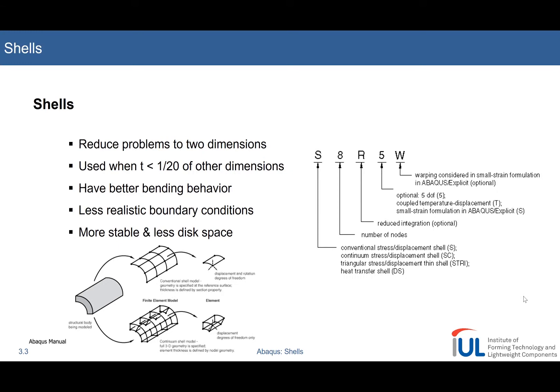From a mathematical perspective, the problems are reduced to two dimensions, and Abaqus provides two general classes of shell elements along with some special elements. These two classes are the conventional shell elements and the continuum shell elements. Generally, shells are used when the thickness is around 1/20th or less of the other dimensions — this is a rough estimate. In some cases even 1/10th could be a criterion to go for shells if you can justify the use.